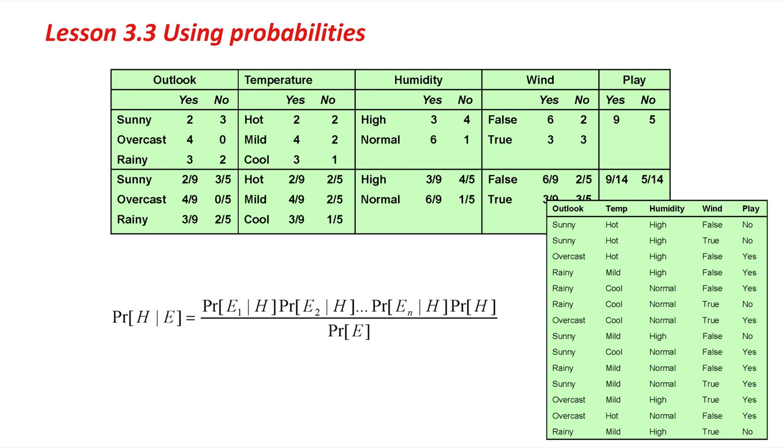Overcast, when the Outlook is overcast, it's always a Yes instance. There are four of those and zero No instances. Rainy is three Yes instances and two No instances. Those numbers just come straight from the data table. Then we take those numbers and underneath we make them into probabilities.